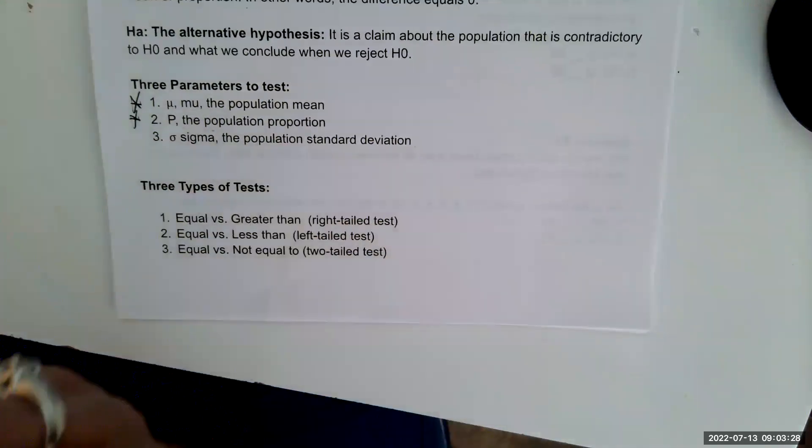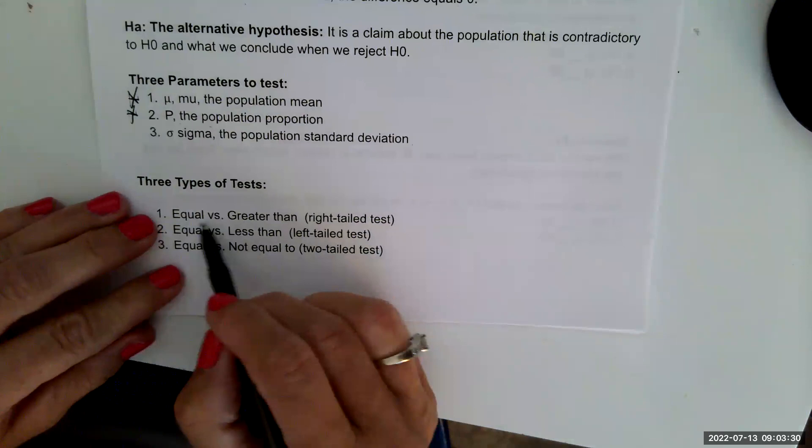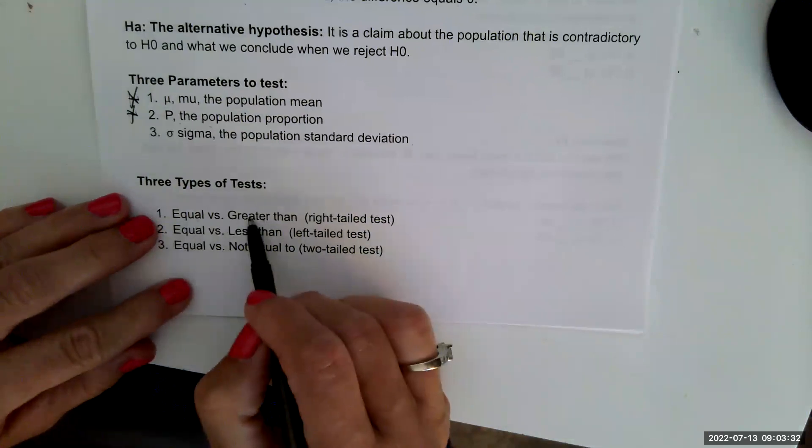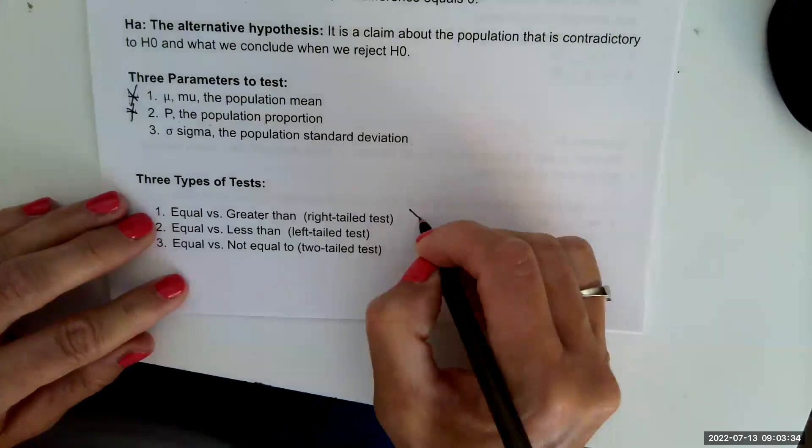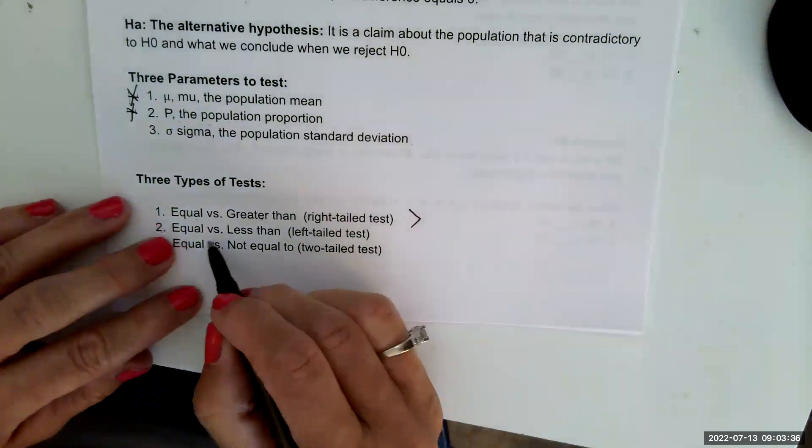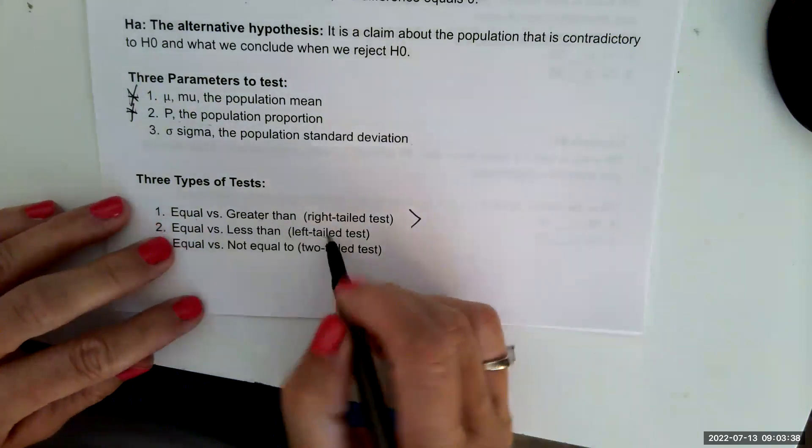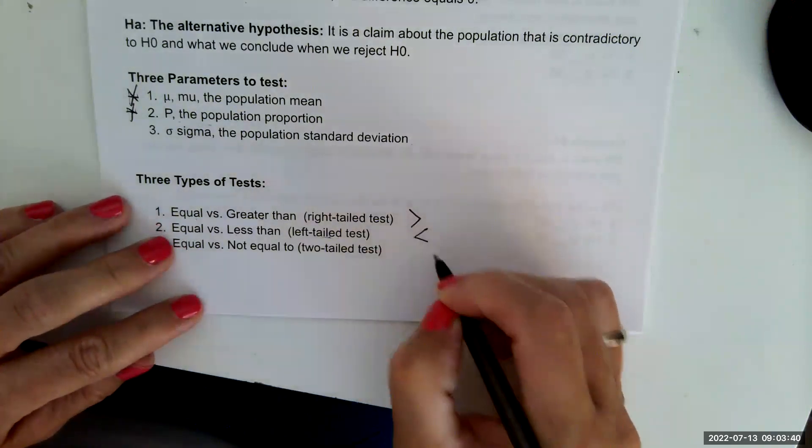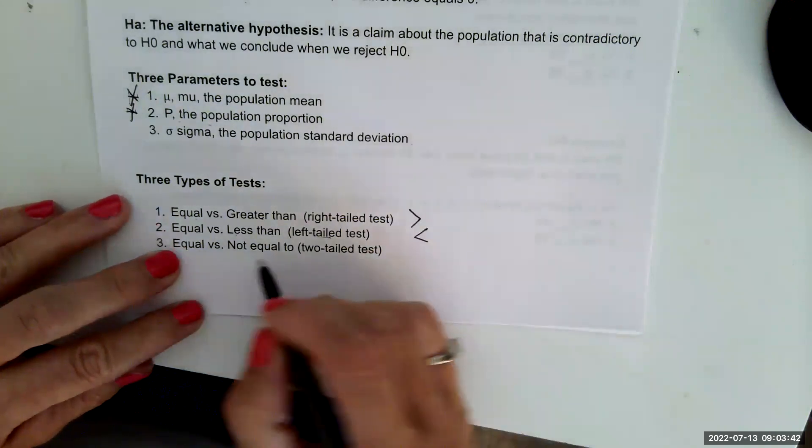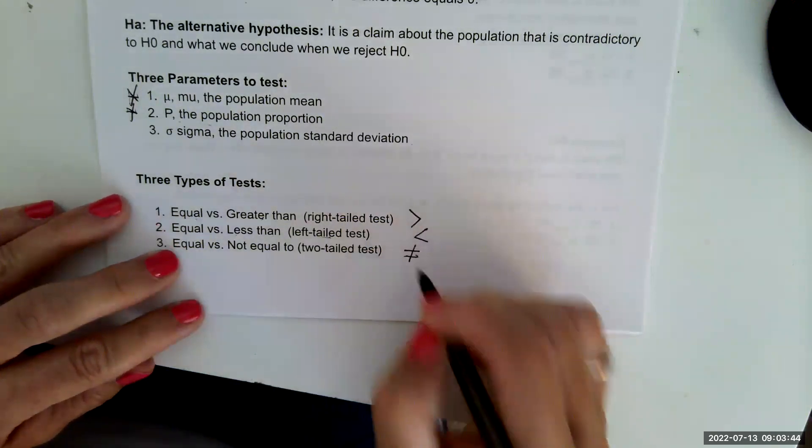There are three types of tests. We could test that there's an equal versus the greater than. We call this a right-tailed test. Or we could do equal versus the less than. We call this a left-tailed test. Or a not equal to, and we call this a two-tailed test.